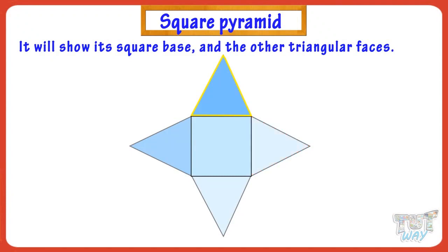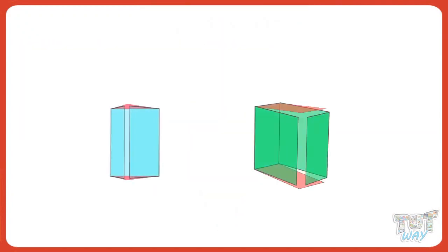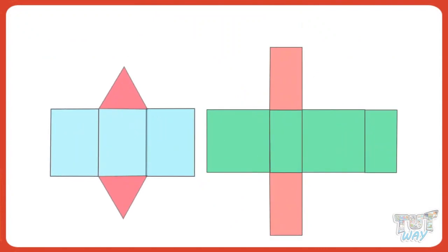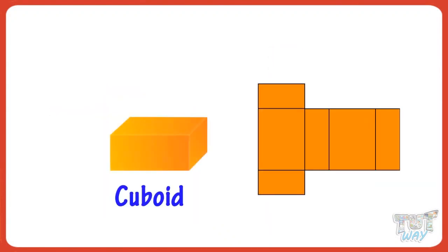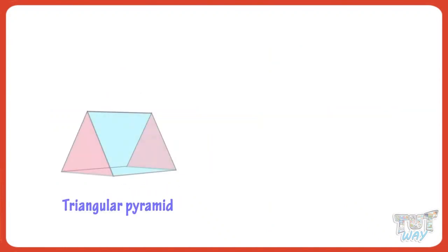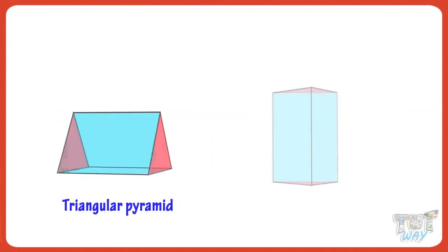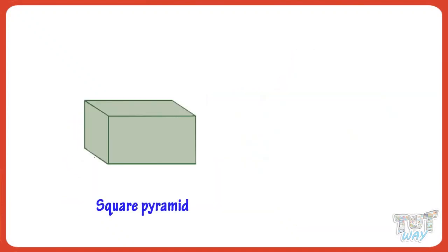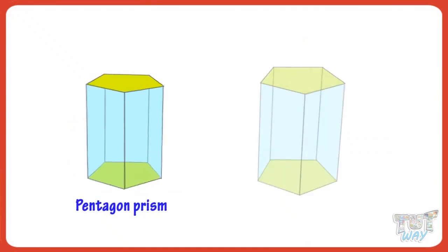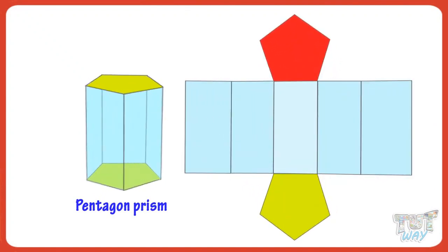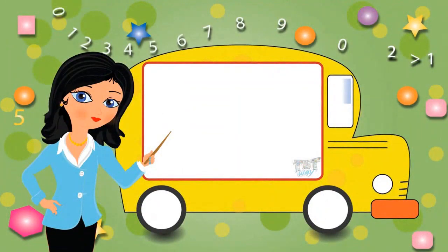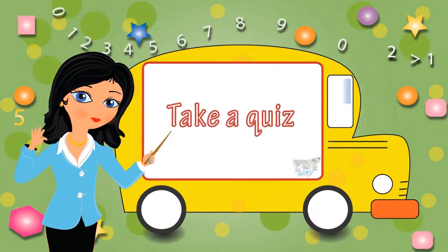So kids, today we learned about various 3D shapes and their nets. Let's have a quick look at some shapes and their nets: this is a cuboid and its net; this is a triangular prism and its net; this is a square prism and its net; this is a pentagonal prism and here is its net. Now you may go ahead and take a quiz to learn more. Bye-bye!